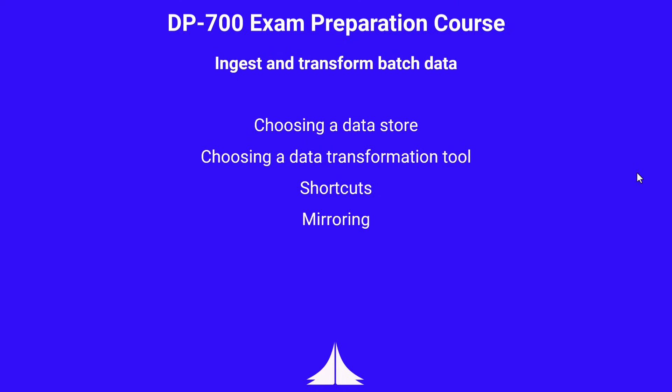Welcome back to the DP700 exam preparation series. Today, we're going to be looking at ingesting and transforming specifically batch data. I wanted to talk through some of the conceptual stuff first: choosing a data store, choosing a data transformation tool within Fabric. I'm also going to do a bit of an overview of shortcuts and mirroring. Then in the next sessions, we're going to be getting hands-on, showing you data transformation techniques in T-SQL and then in PySpark.